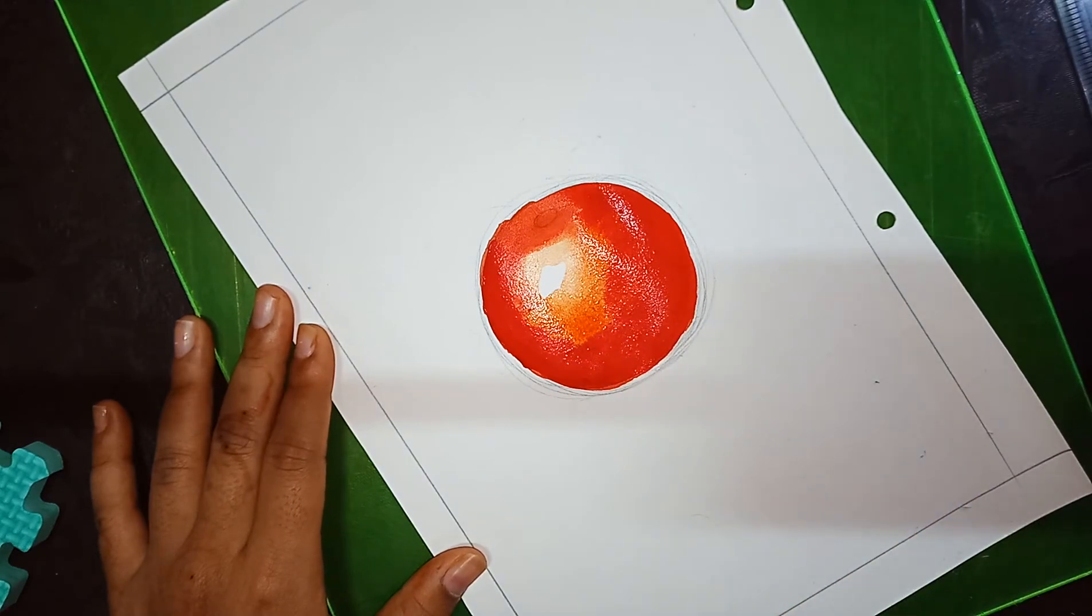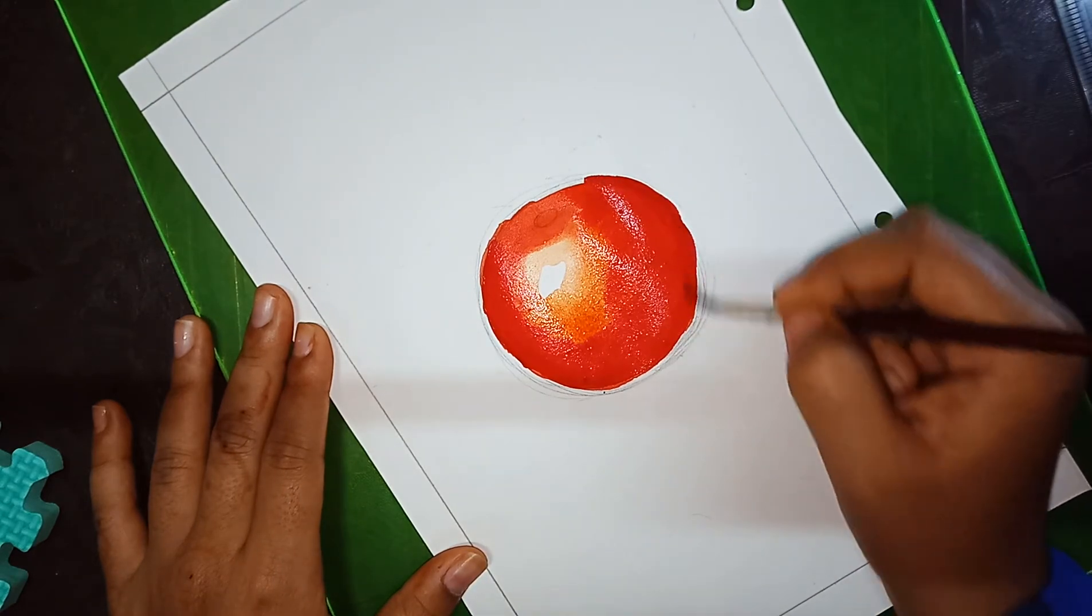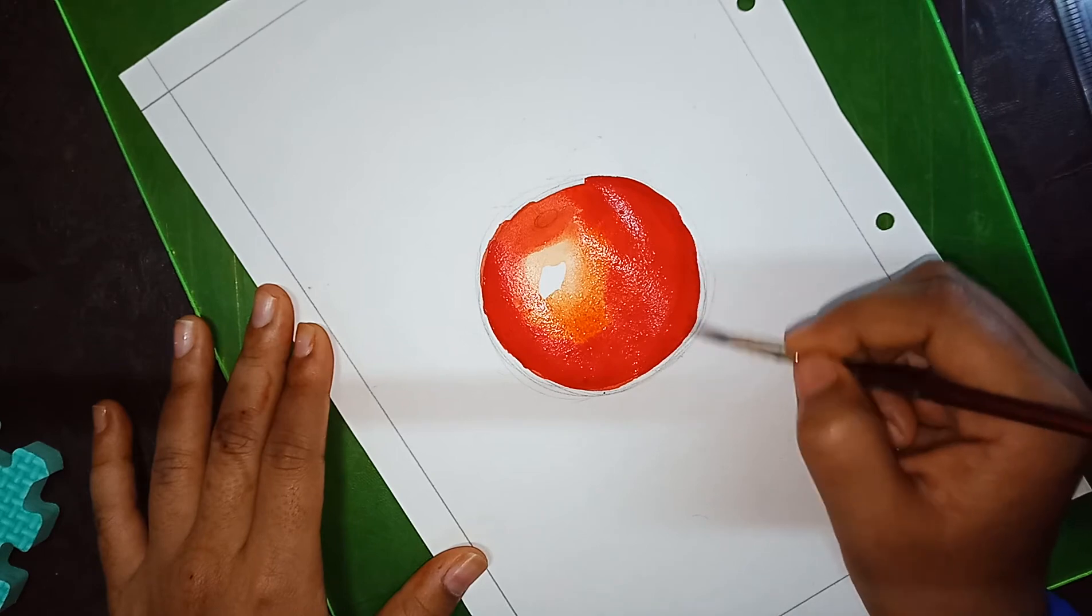Now again, crimson color from the borders. Do not border the tomato because it's a natural object.